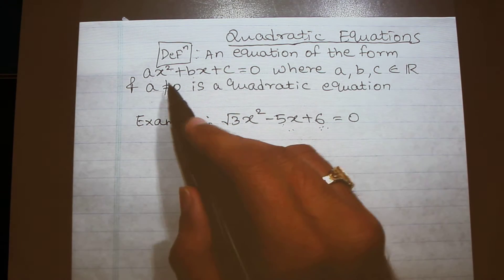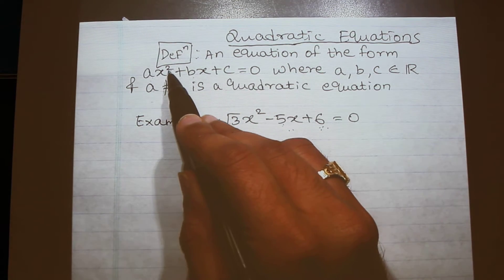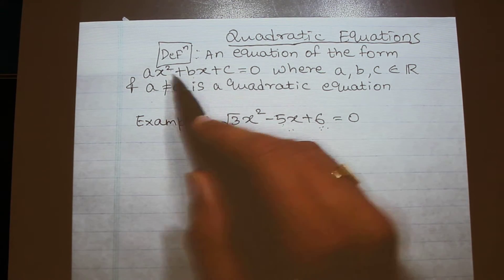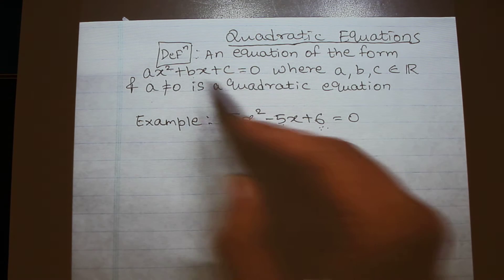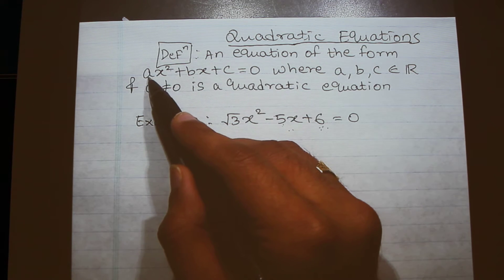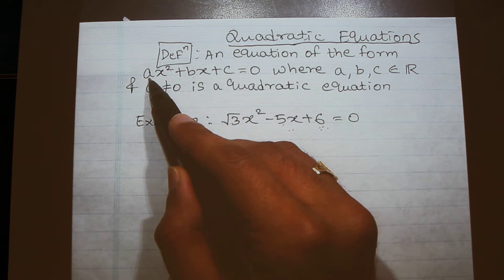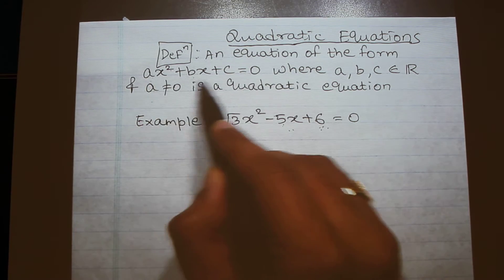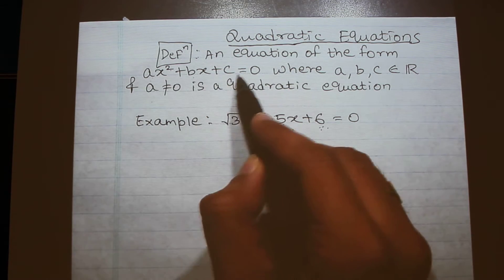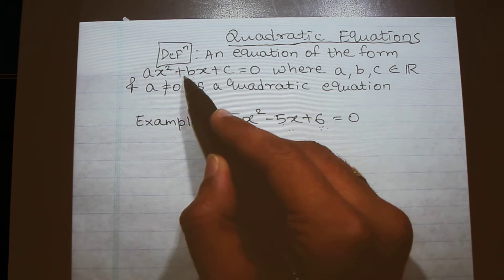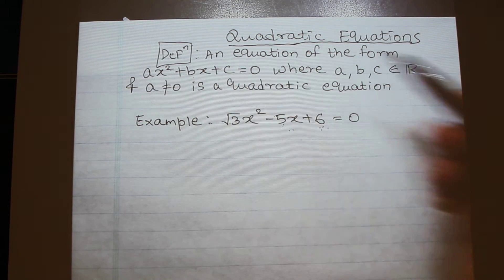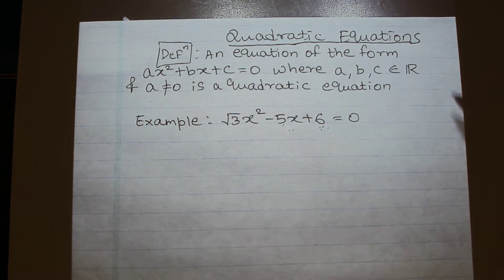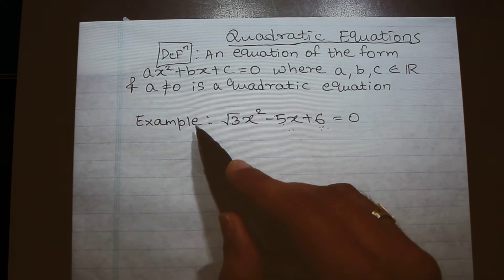Note that in a quadratic equation the highest power of the variable is 2. Also note that a cannot be zero, because if a is zero it will not be a quadratic equation anymore — it will become a linear equation.